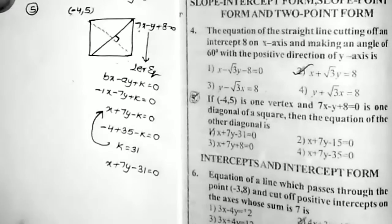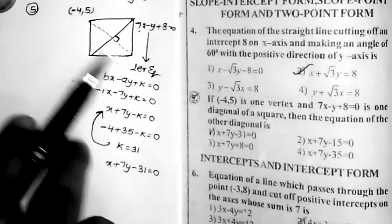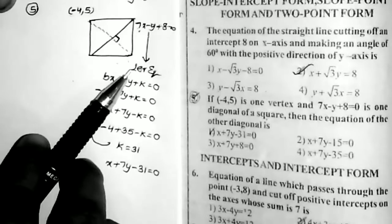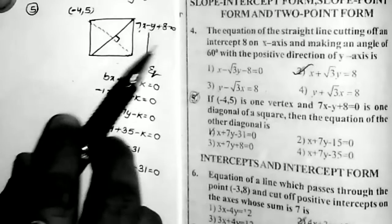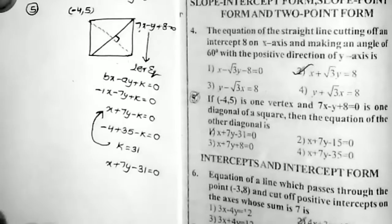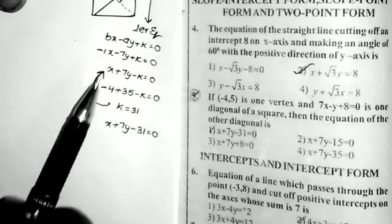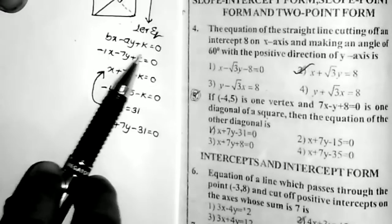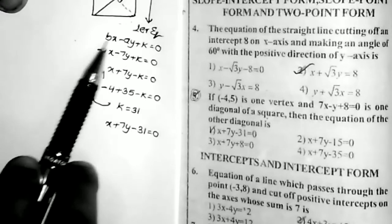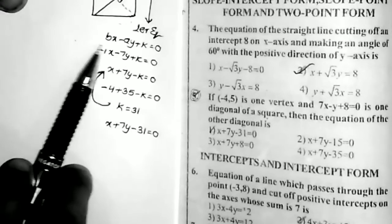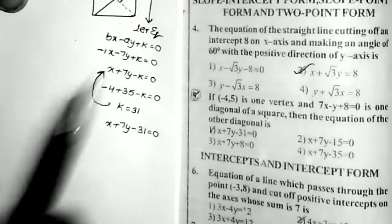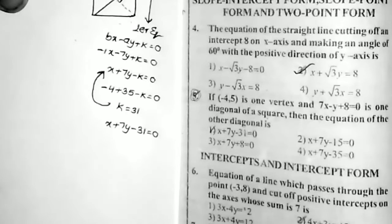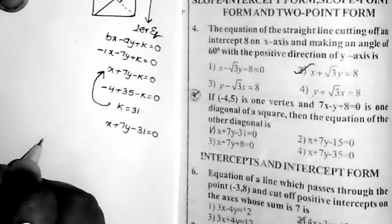The second diagonal is the perpendicular equation of the first diagonal. We can find the perpendicular line equation using the formula Bx − Ay + K = 0. Very easy problem.